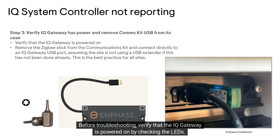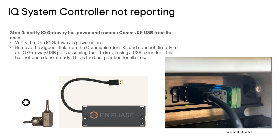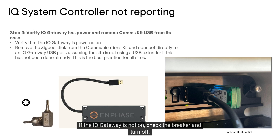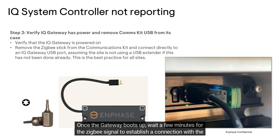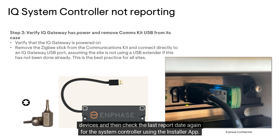Before troubleshooting, verify that the IQ gateway is powered on by checking the LEDs. If the IQ gateway is not on, check the breaker and turn it off, then turn it on again. Once the gateway boots up, wait a few minutes for the Zigbee signal to establish a connection with the devices.